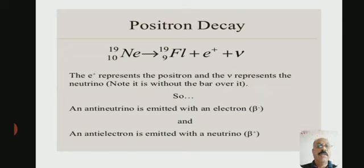This is the equation. The parent element undergoes decay. The e+ represents the positron and nu represents the neutrino. An anti-neutrino is emitted with an electron (beta minus); an anti-electron is emitted with a neutrino (beta plus).